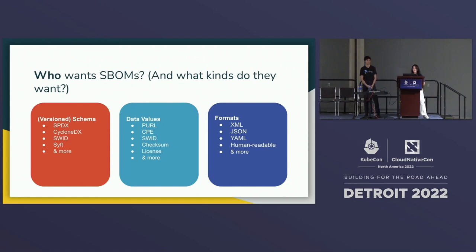If your stakeholders are interested in license compliance auditing, you might choose SPDX as your SBOM schema because it's ideal for complex license information. You'll still want to align with them about the expected format — JSON, XML, or another. Another major use case is vulnerability scanning. In that case, you might use CycloneDX because it has flexible support for a number of data fields related to package identification. We have package URLs, PURLs, CPEs, and SWID tags — all different ways of identifying packages that can then be used for vulnerability identification.